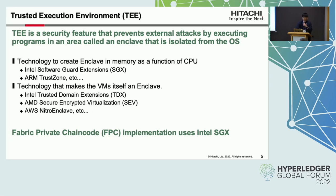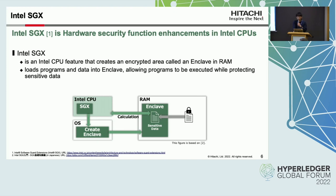A trusted execution environment is a security feature that prevents external attacks by executing programs in an area called an enclave that is isolated from the operating system. There are technologies that create enclaves in memory as a function of the CPU, such as Intel SGX and ARM TrustZone, and other technologies that make the virtual machine itself an enclave. The Fabric Private Chain Code implementation uses Intel SGX, an Intel CPU feature that creates an encrypted area called an enclave in random access memory, allowing programs to be executed while protecting sensitive data.